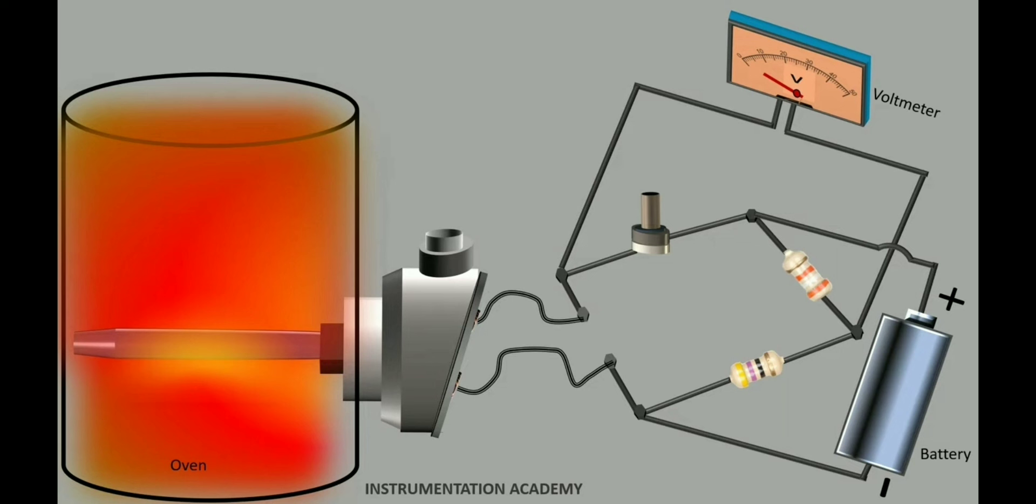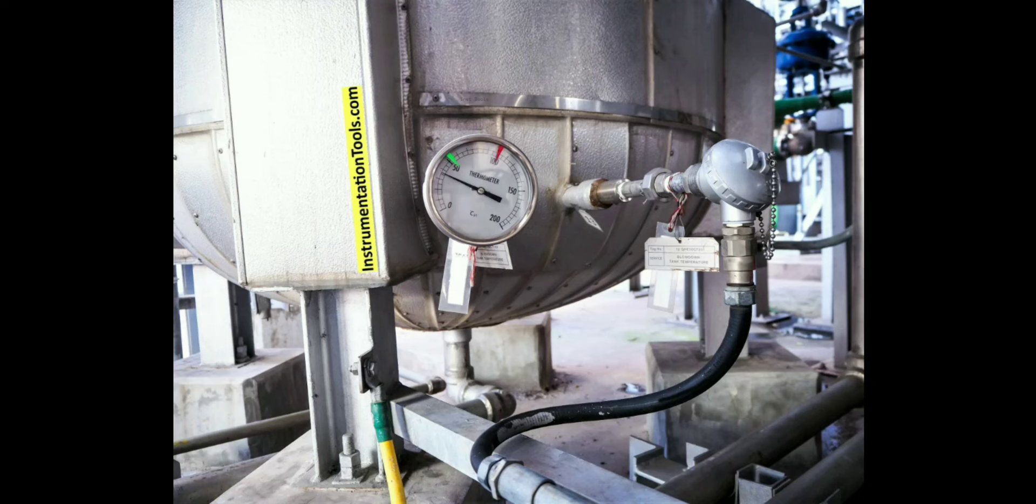1 to 5 volts or 1 to 10 volts to communicate with control systems like PLC, DCS, or PID control. Compensation for the temperature of a reference junction, which is a cold junction, ensures accurate temperature measurements.